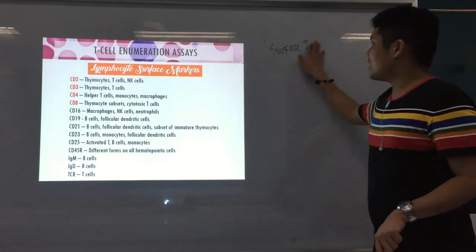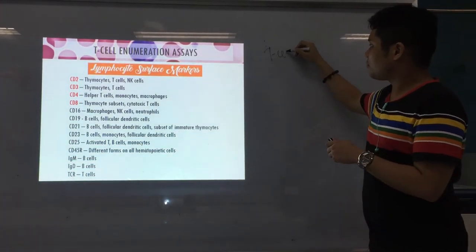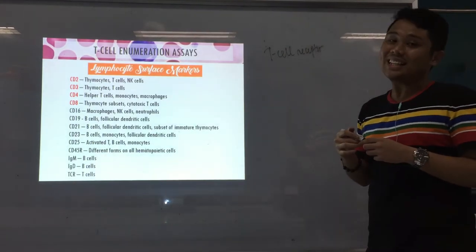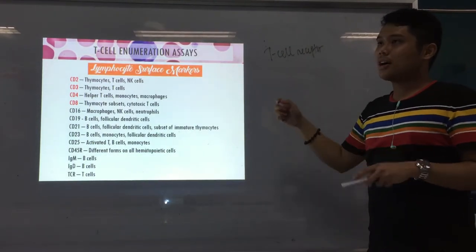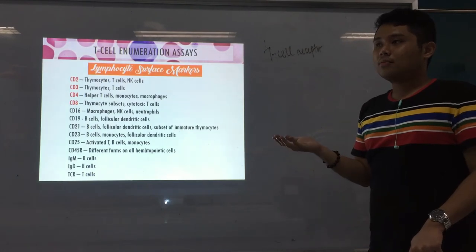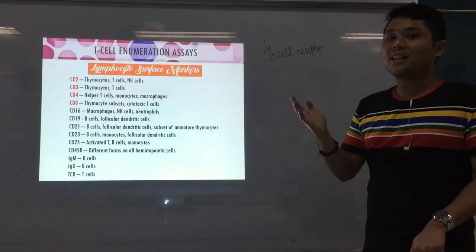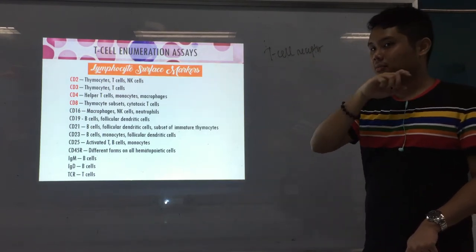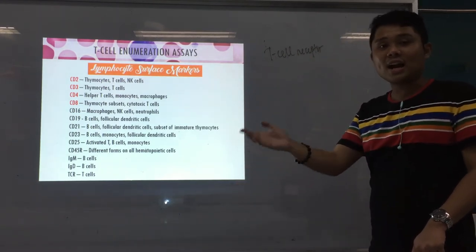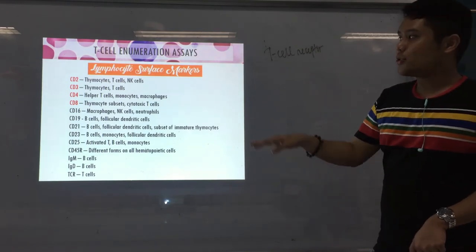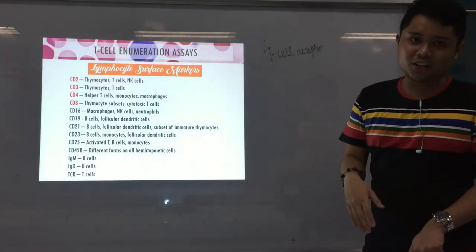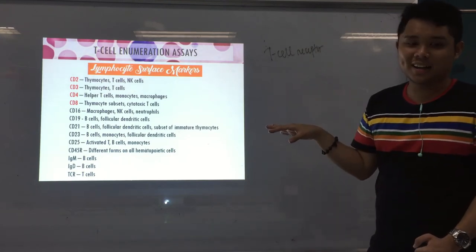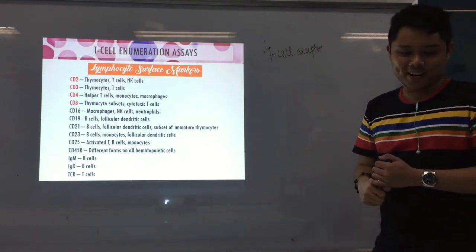TCR stands for T-cell receptor, and by the name itself, it is found on T-cells. It is used for identifying or recognizing pathogens — the T-cell receptor binds to the receptor on the bacteria and other pathogens. Those are the different lymphocyte surface markers. Later in the topic on flow cytometry, you will appreciate CD markers more.